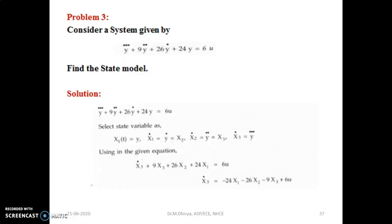Problem 3: a differential equation is given and you are asked to find the state model. The equation is y triple dot plus 9 y double dot plus 26 y dot plus 24 y equals 6u. This is an example of phase variables, where the derivatives are given directly.